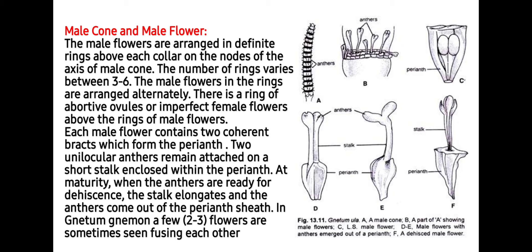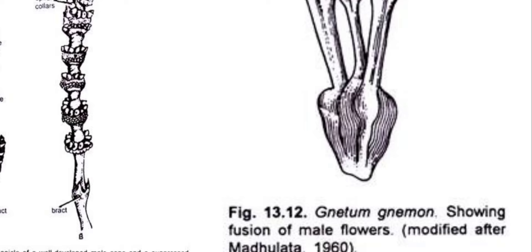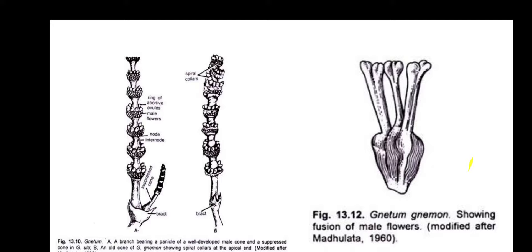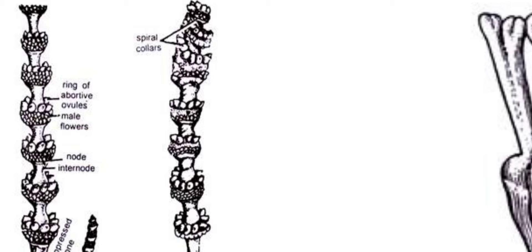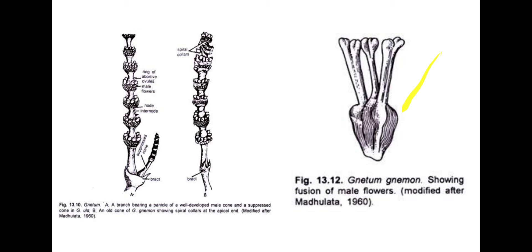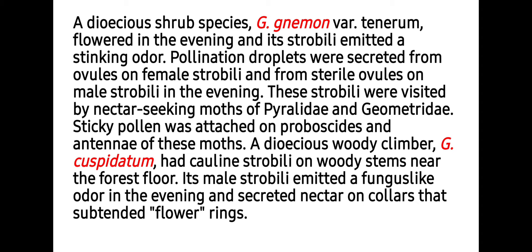In Gnetum gnemon, a few flowers are sometimes seen fusing with each other, as you can see in the last image. Here you can see Gnetum gnemon having fused anthers, and in the earlier two images you can see abortive female ovules over the male flower and spiral collar in the male inflorescences.